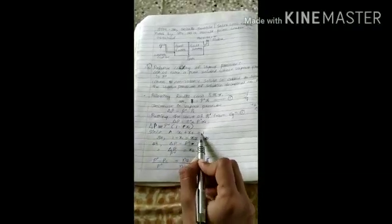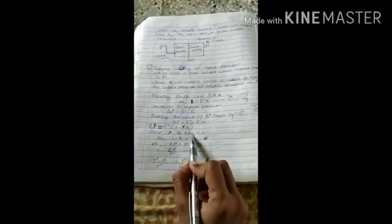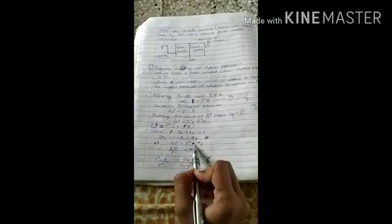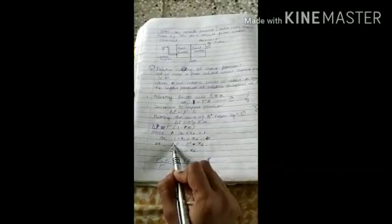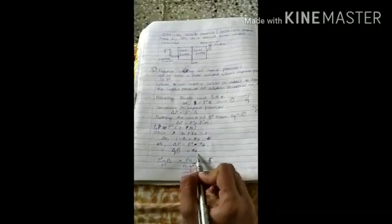Taking p0 common, we will get 1 minus x1. Since x1 plus x2 equals 1, we can write 1 minus x1 equals x2. From this, delta p by p0 equals x2. We will substitute delta p equals p0 minus p1.